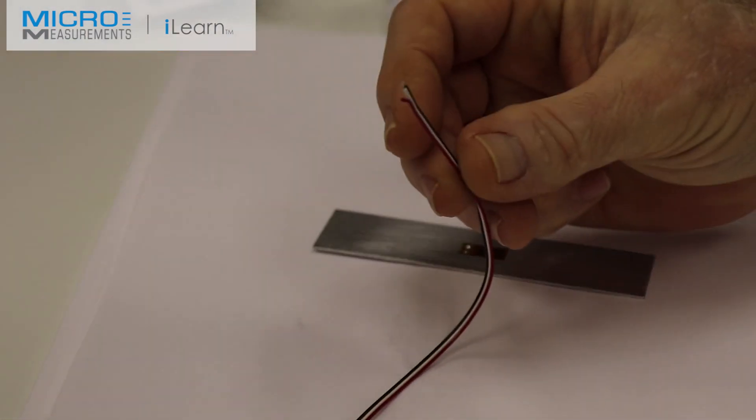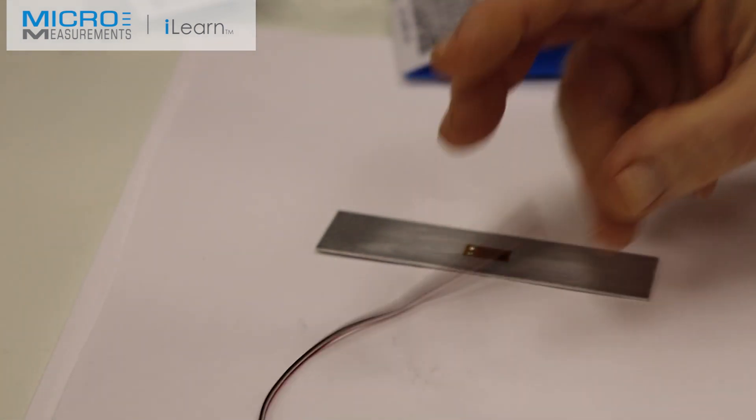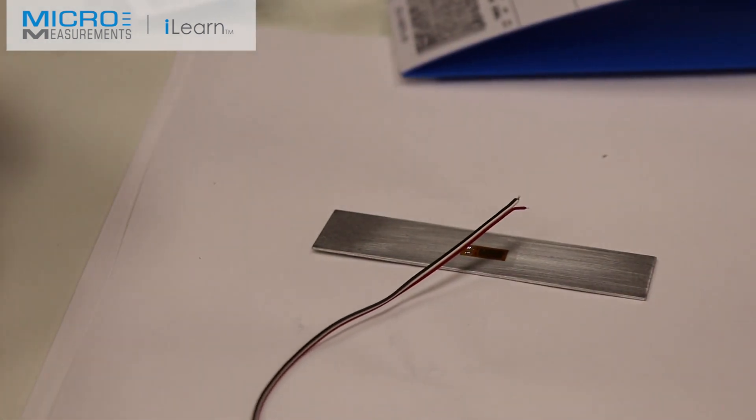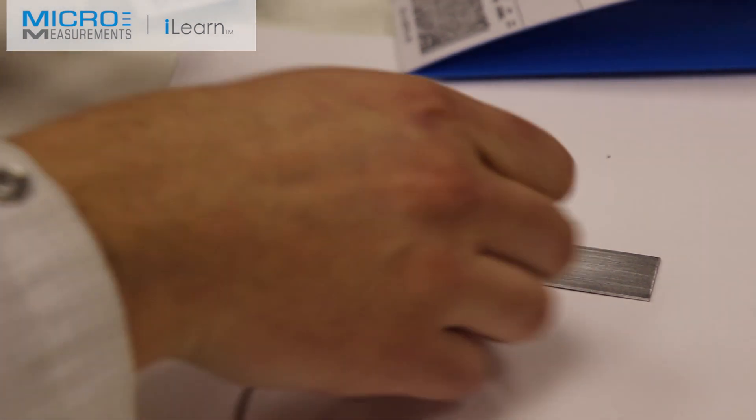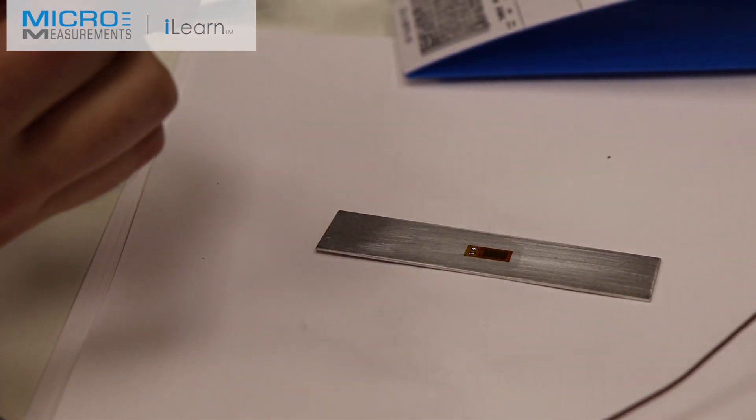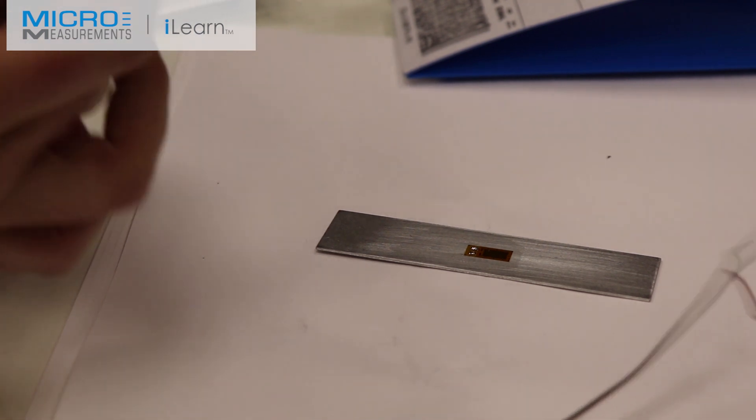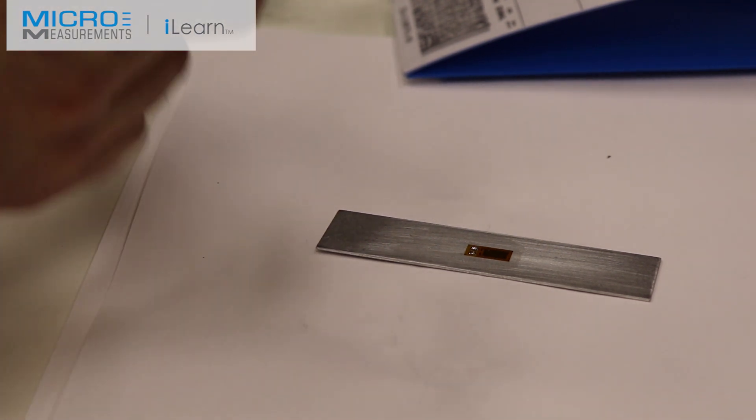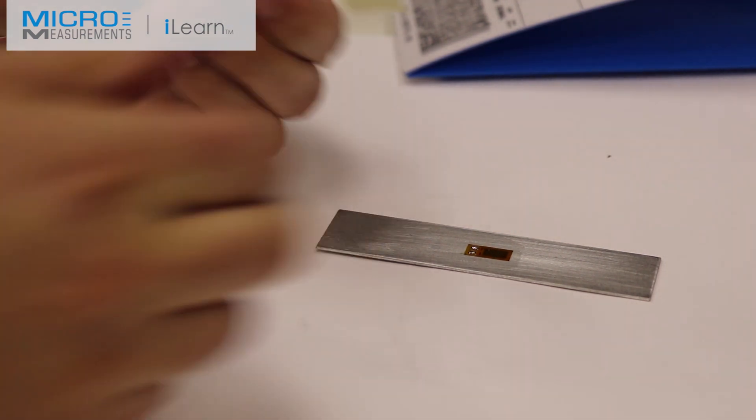We've previously tinned and stripped the lead wire system to go with this three-wire quarter bridge setup. Colin's going to take a piece of the paper drafting tape, PDT-1, and put it across the end of the lead wire system and form the classic cobra head. He's going to spring load it.